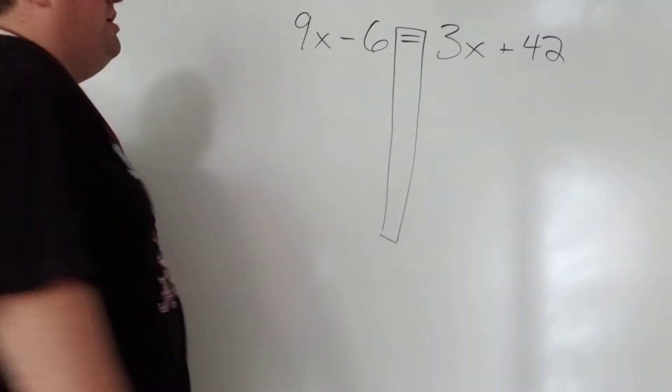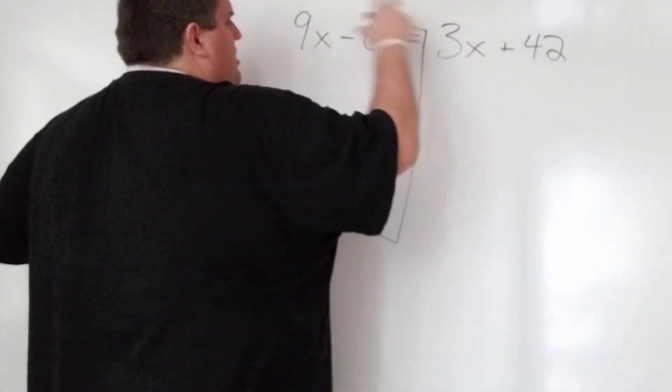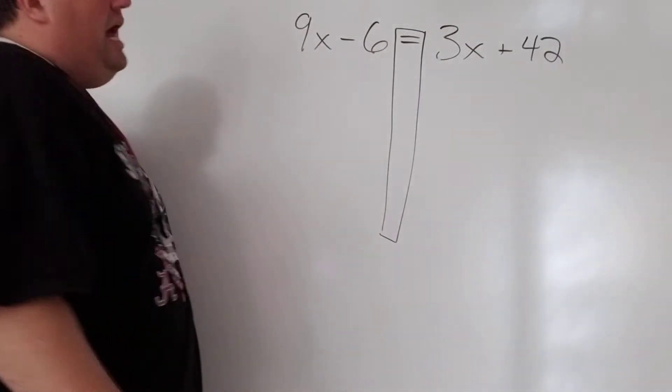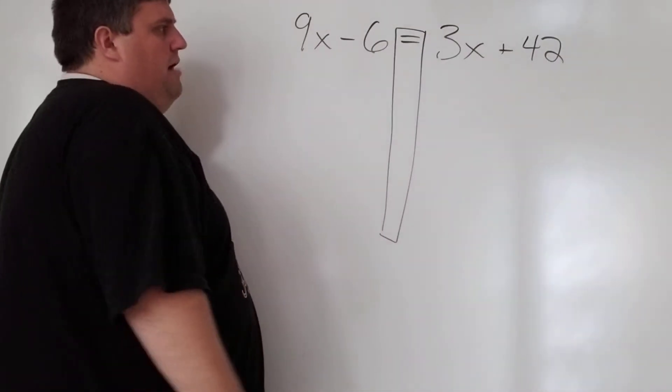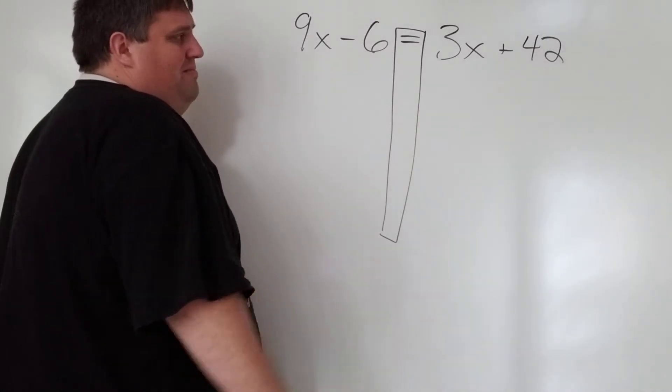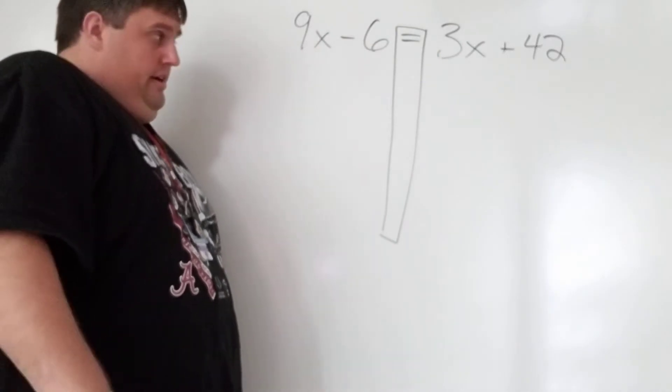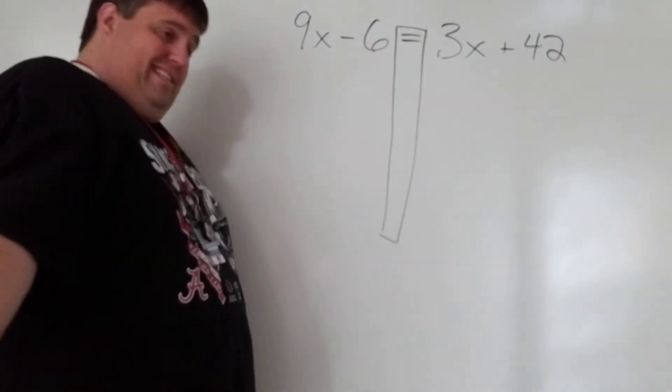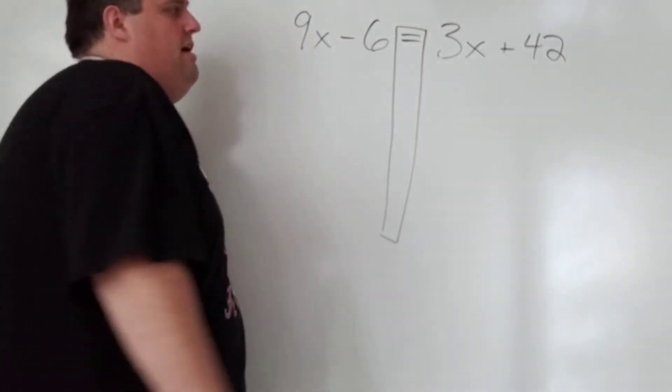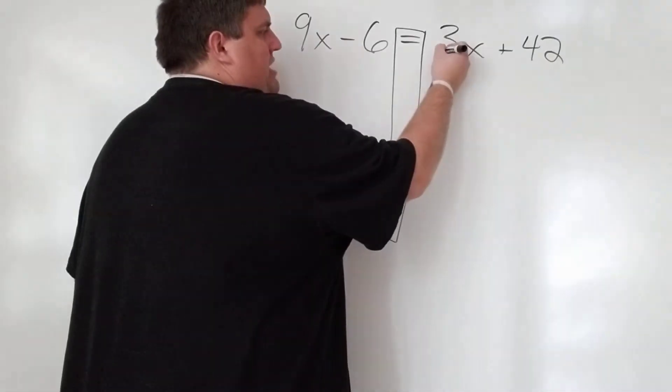So whether that's 3x or 9x, it's actually not going to matter which one you get rid of, which is kind of cool. Typically, I get rid of the smaller one. If one of them is negative, I get rid of that because it's easier to add than subtract. But I'm going to go ahead and get rid of those 3x.